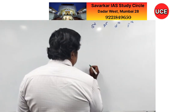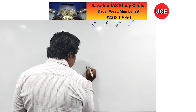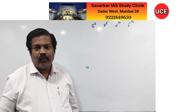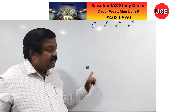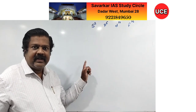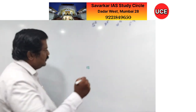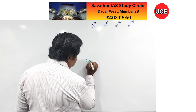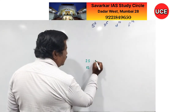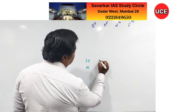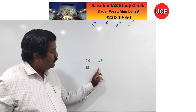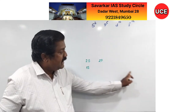Now how to write the configuration: start with 1s — where 1 indicates the first orbit and s indicates the subshell. Then 2s, then 2p. For the first orbit, only s is present — p, d, f are not there. For the second orbit, it is s as well as p only.